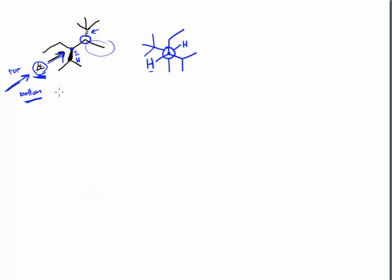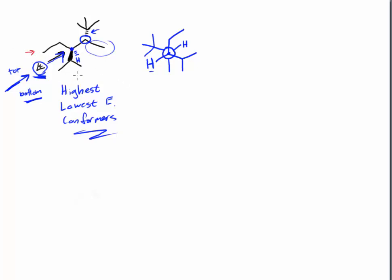The question might then ask us to show the highest and lowest energy conformers. In order to decide what those are, we need to understand what the largest groups are on each carbon. On the front carbon, we've got the ethyl group, isopropyl, and the hydrogen — hydrogen is obviously not going to be the largest group. The isopropyl is the largest group on the front carbon because it has the most branching nearest to the central carbon.